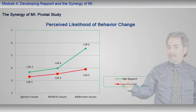This is an indicator that something special is happening in MI. Let's add in the estimated mean for cell 6 if there were no synergy involved. The difference between this estimated mean and the actual mean for cell 6 can only be accounted for by the synergy of MI. As you can see, the synergy of MI is extremely powerful — it only occurs when the patient's issues are addressed under the condition of high rapport with the patient.